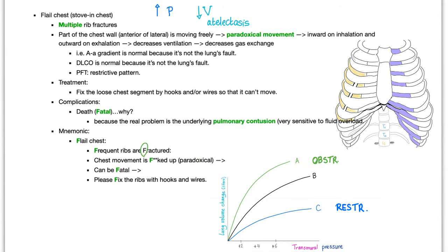Flail chest: when chest wall movement is disrupted because the ribs are broken, it is called paradoxical breathing. When you breathe in, normally the ribs go outwards — but instead they go inwards, increasing pressure and decreasing volume. When the lung collapses, it's called atelectasis.